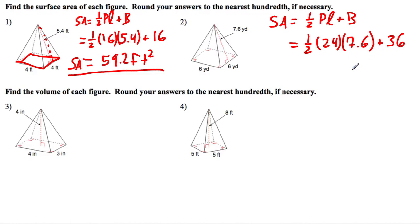So we get one-half times 24 times 7.6, and we add that 36. And we get that the surface area is equal to 127.2 yards squared.